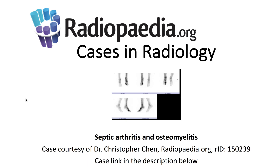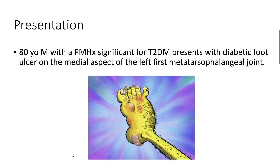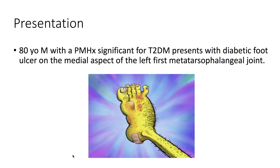I'll be presenting today's Radiopaedia.org case on septic arthritis and osteomyelitis. The case link is in the description below. We have an 80-year-old male with a past medical history significant for type 2 diabetes who presents with a diabetic foot ulcer on the medial aspect of the left first metatarsophalangeal joint.